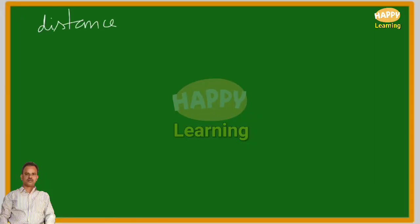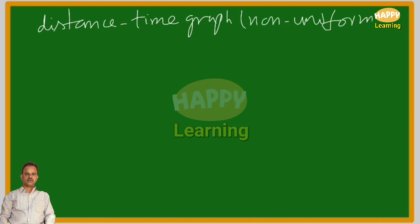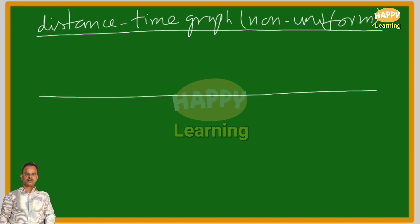Distance-time graph for non-uniform motion. Let us indicate the motion of a body along a straight line. The x-axis is for time and the y-axis is for distance. At time t equal to 0 seconds, distance is 0 meters.